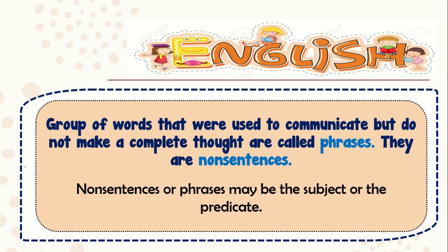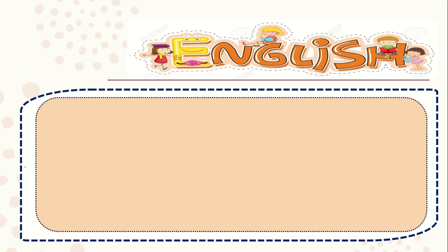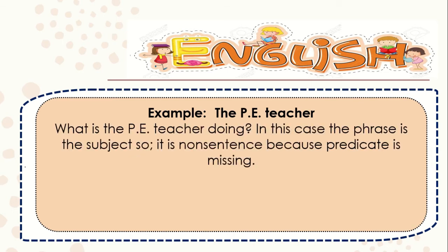A group of words that were used to communicate but do not make a complete thought are called phrases. They are non-sentences. Non-sentences or phrases may be the subject or the predicate. For example, for our non-sentence: the PE teacher. The question here is, what is the PE teacher doing? In this case, the phrase is the subject, so it is a non-sentence because the predicate is missing. Did you get it?